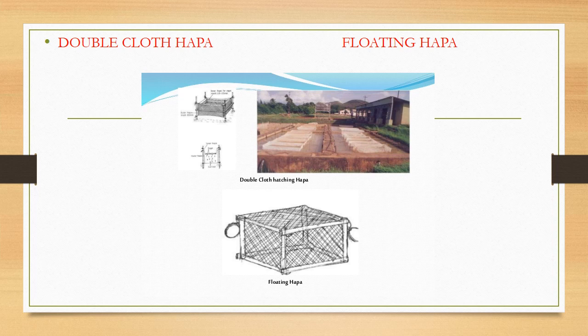After inner hatching, the spawn moves from the inner to the outer hapa and is kept in the outer hapa for 48 hours until the yolk sacs are absorbed. The floating hapa is an improved version of the double cloth hatching hapa. It is mounted on a frame made by joining polythene or aluminum pipes.